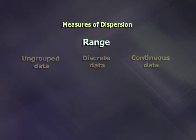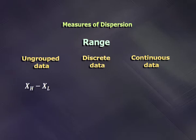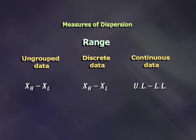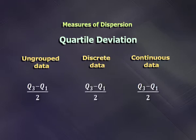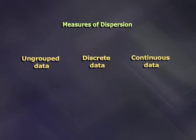The first is range. For ungrouped data, it is XH minus XL, that is the highest observation minus the lowest observation. The same applies for discrete data: XH minus XL. For continuous data, it is UL minus LL, that is the upper limit minus the lower limit. We shall now look at the formulas for quartile deviation. For ungrouped data, discrete data and continuous data, the formula is the same: (Q3 minus Q1) upon 2, where Q1 is the first quartile and Q3 is the third quartile for the given data.